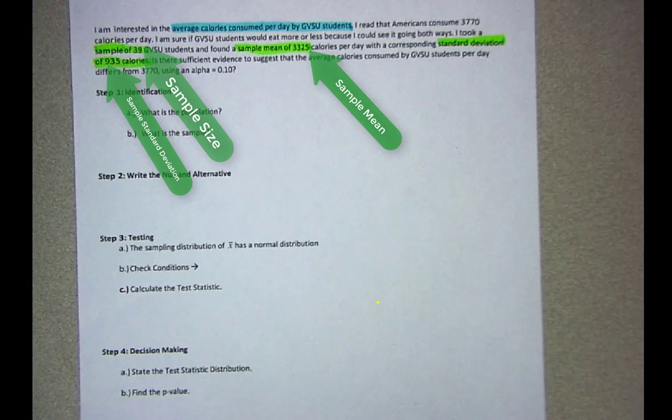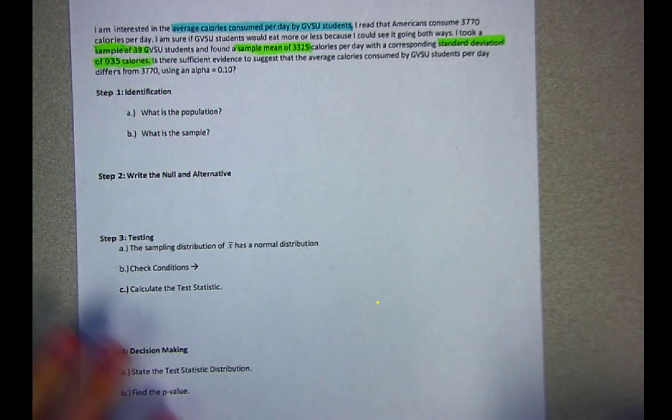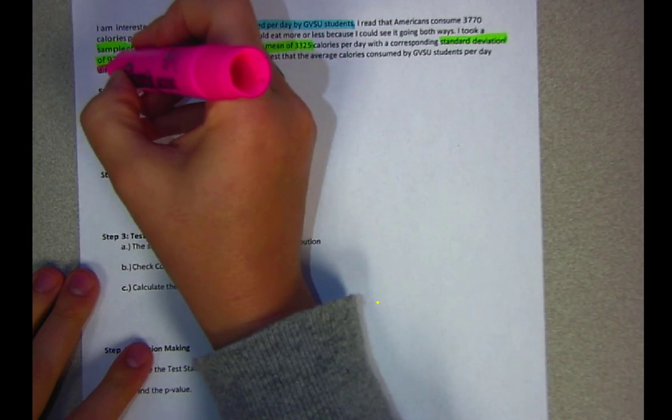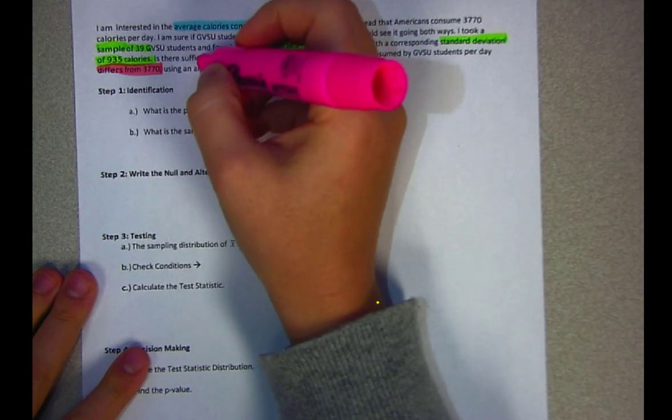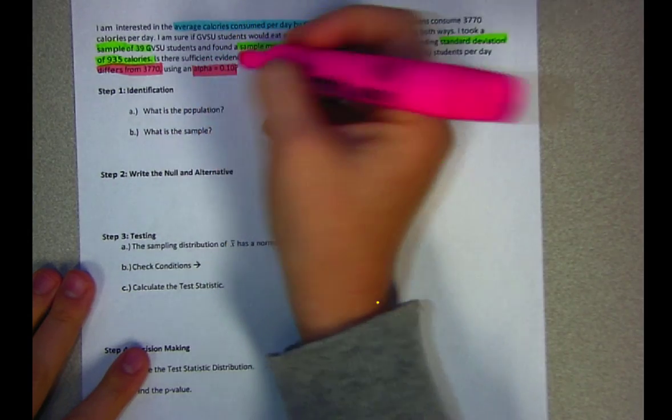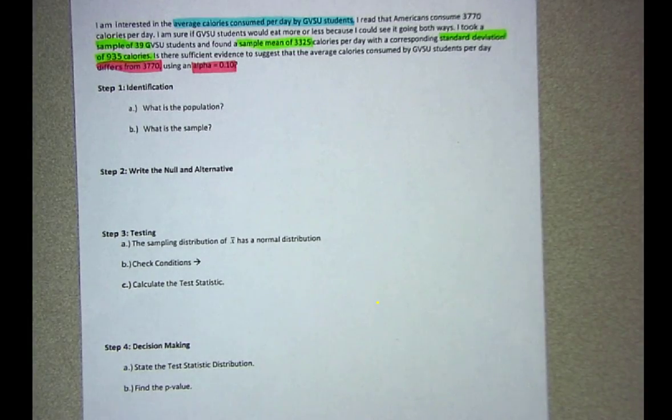There will be three measurements included on the sample: sample size, sample mean, and sample standard deviation. Finally I need information on what I want to show. Here I want to show that the average calories differ from 3770 and I'm going to test that using an alpha equal to 0.1.